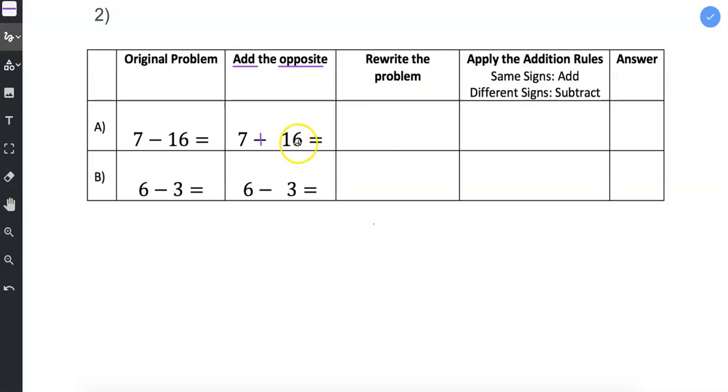and then we record the opposite of the number. So if this is a positive 16, we record this as negative 16. Then I rewrite the problem. 7 minus 16 becomes 7 plus a negative 16.